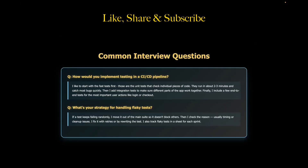Now for interview questions asked often. First: how would you implement testing in a CI/CD pipeline? You can answer: I would implement a multi-stage testing approach — first unit tests, followed by integration tests, then a subset of end-to-end tests only for critical paths. Start with fast unit tests that check individual pieces of code, running in about two to three minutes and catching most bugs quickly. Then add integration tests to make sure different parts of the application work together. Finally, add a few end-to-end tests for the most important user actions like login or checkout. Note that unit tests are mostly covered by developers — as a QA, you are responsible for integration tests and end-to-end tests.